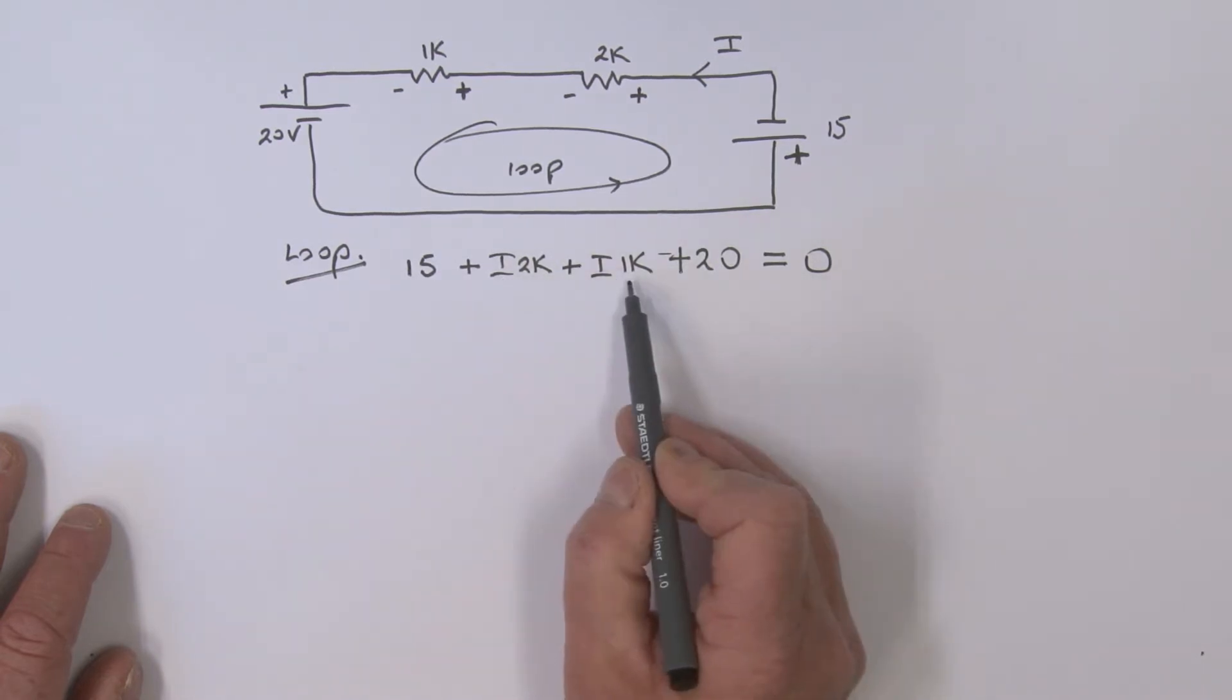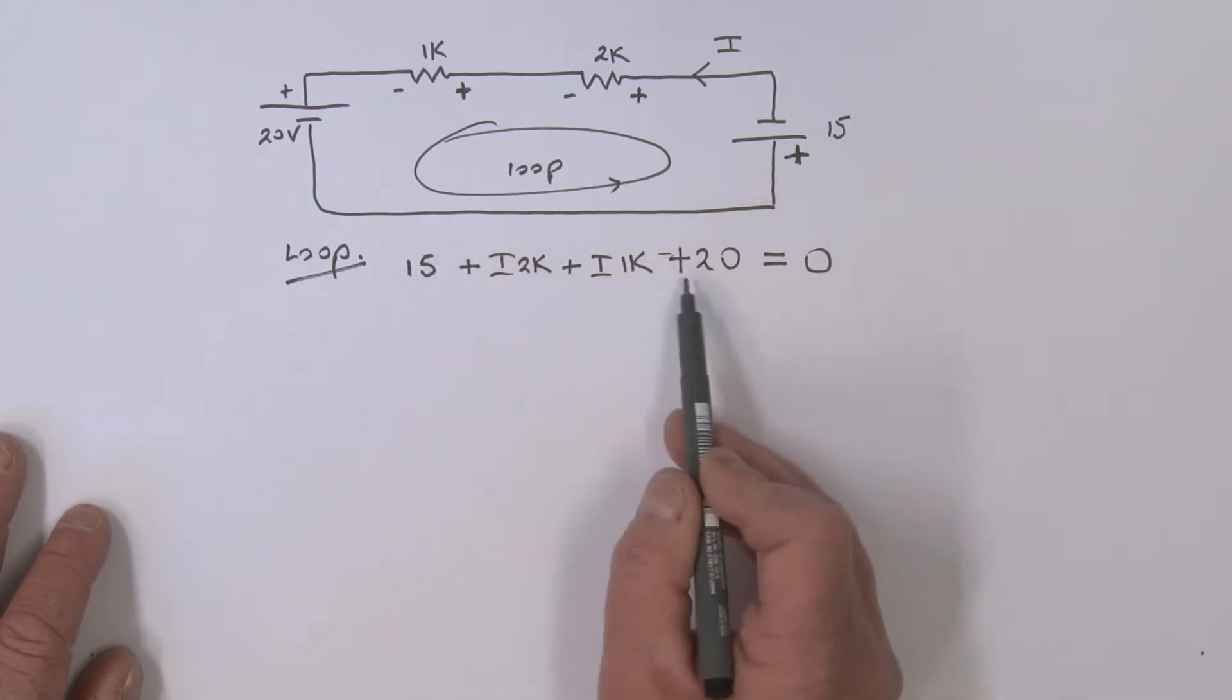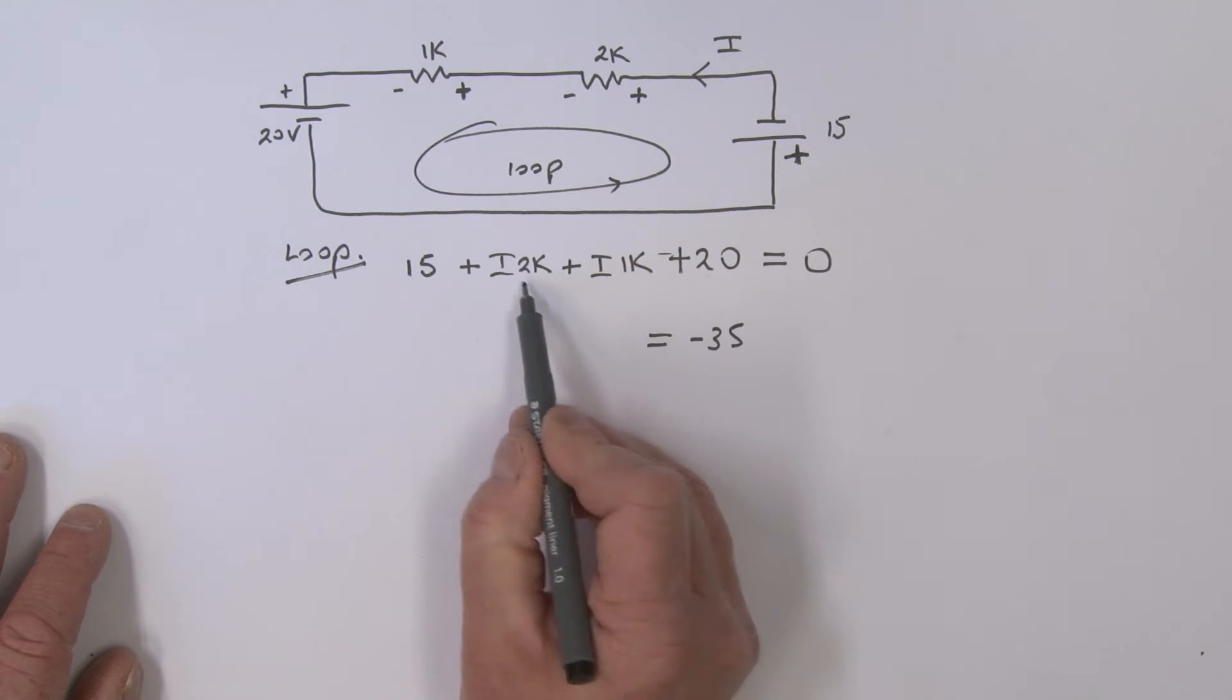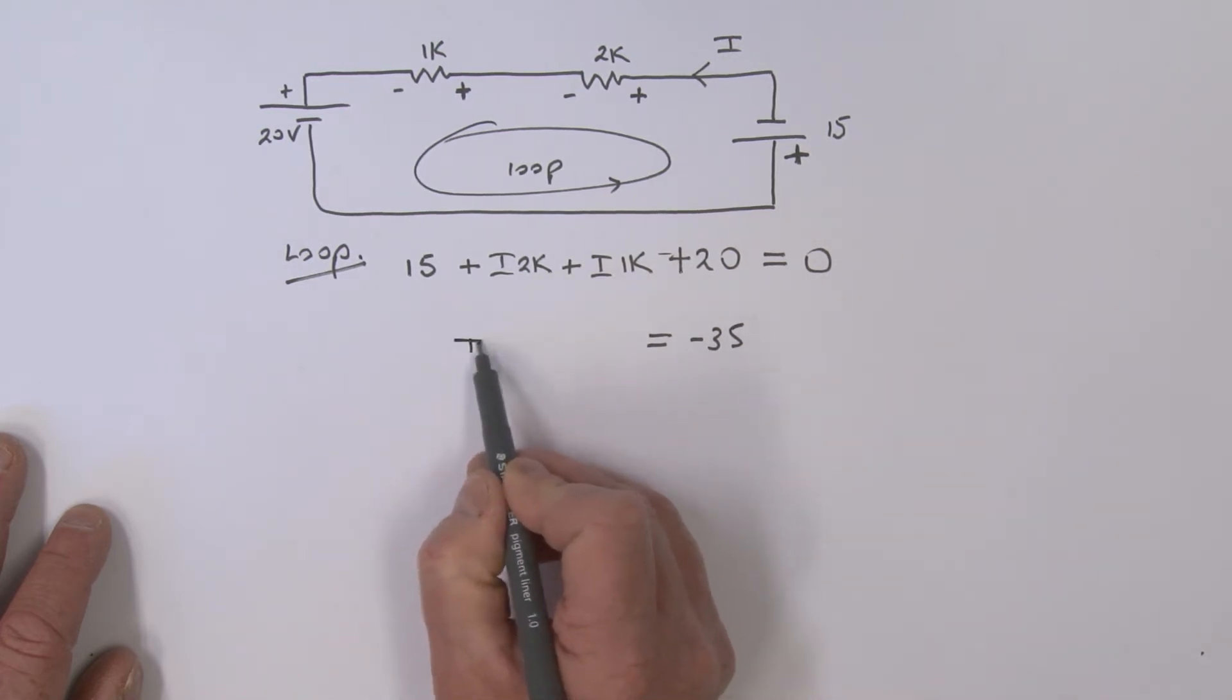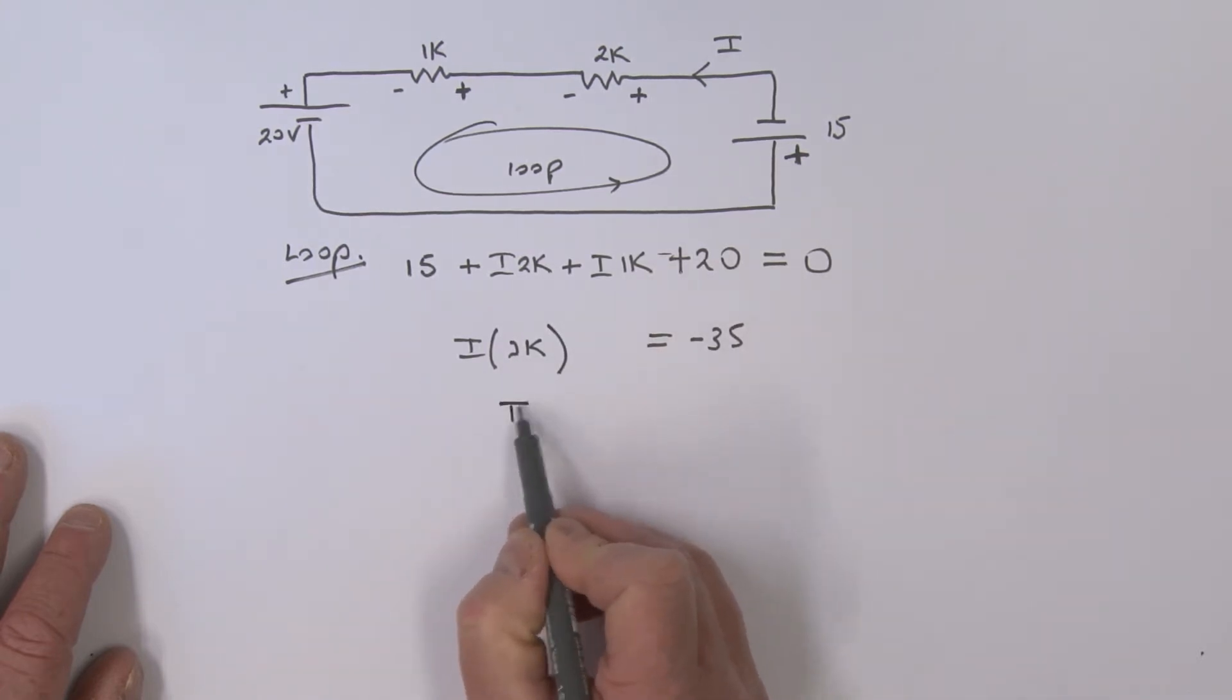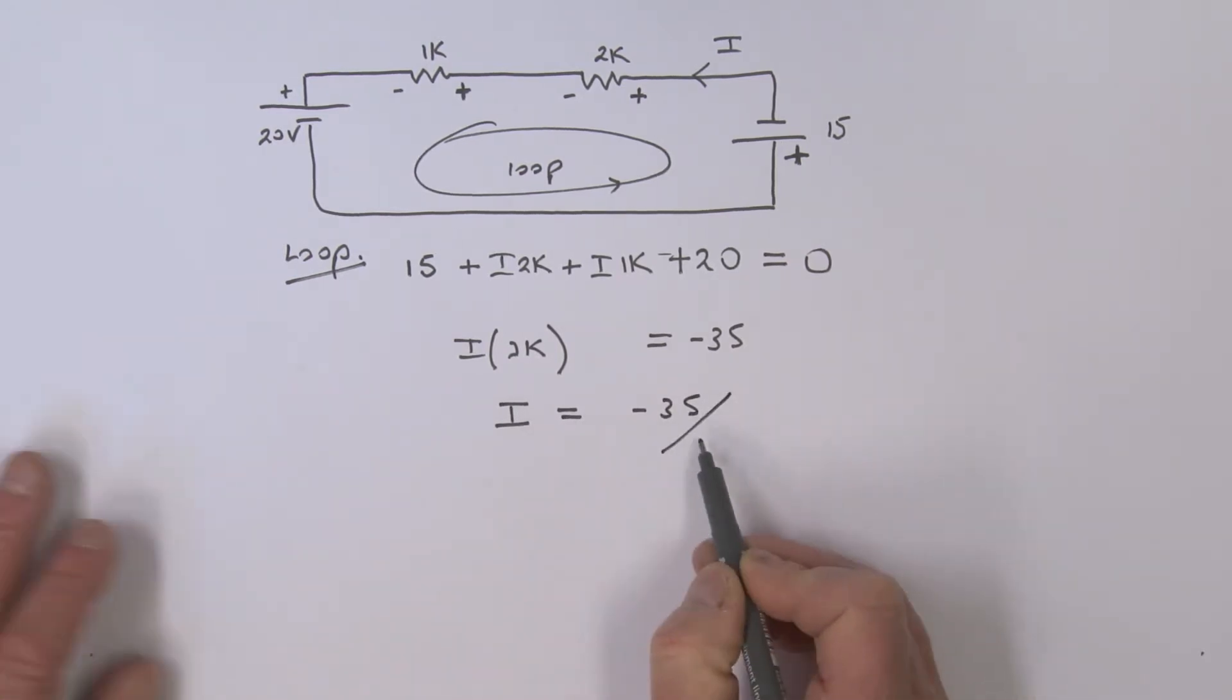What do we do here? We're going to take the 15 and 20 to the other side, which is equal to minus 35. I'm going to collect the I terms together, so I've got I times 2K plus 1K—that's 3K. Therefore, my I is equal to minus 35 divided by 3K.